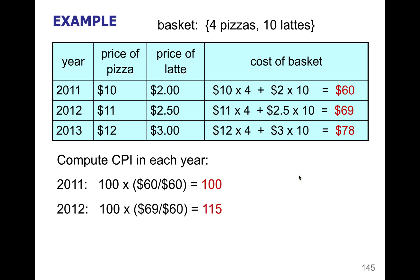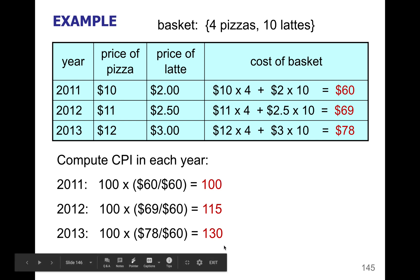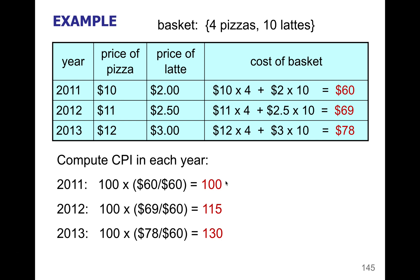For 2012, we get a CPI of 115, and for 2013, we get a CPI of 130. Remember, CPIs are just numbers — they are not dollar amounts, and they are not percentages.